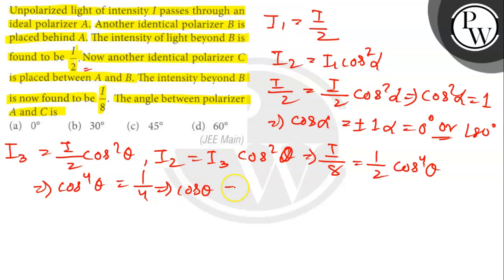So cos theta is plus or minus 1 by root 2, so here theta is pi by 4 or 3 pi by 4. So polarizer C makes an angle of pi by 4 or 3 pi by 4 with A. So here answer is option C, 45 degree. Pi by 4 is 45 degree. Thank you.